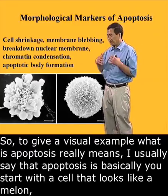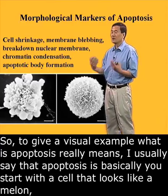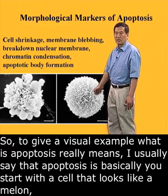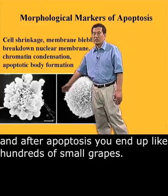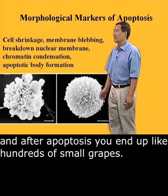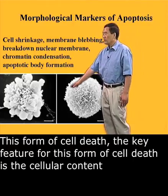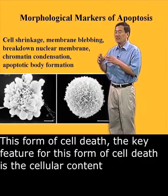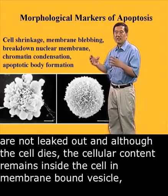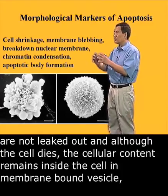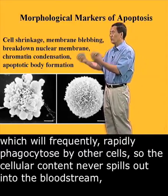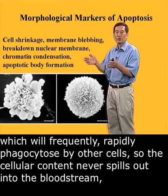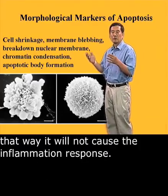To give a visual example of what apoptosis really looks like — I usually say that apoptosis is basically starting with a cell that looks like a melon, and after apoptosis you end up with hundreds of small grapes. The key feature of this form of cell death is that cellular contents are not leaked out. Although the cell dies, the cellular contents remain inside the cell and membrane-bound vesicles, which are rapidly phagocytosed by other cells. So the cellular content never spills out into the bloodstream, and it will not cause an inflammatory response.